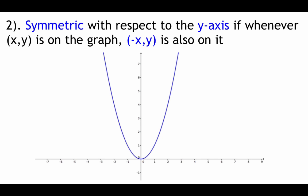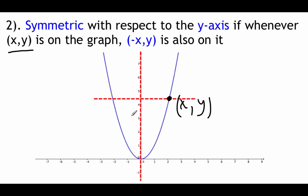The next type of symmetry is y-axis symmetry. We're still going to be dealing with this general (x, y) point. In order to have y-axis symmetry, if the point (x, y) is on our graph, then we also have to have (-x, y). We're flipping our graph across the y-axis, so that means a negative x value, but we didn't move anywhere up or down, so that y value stays exactly the same.